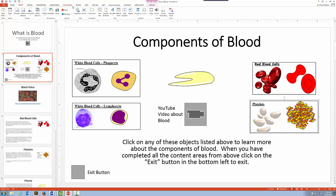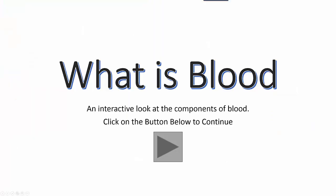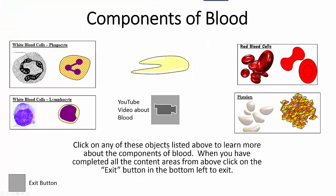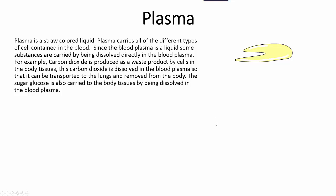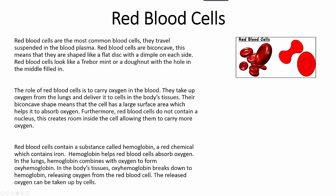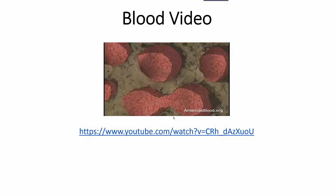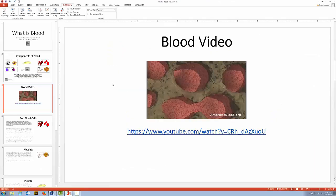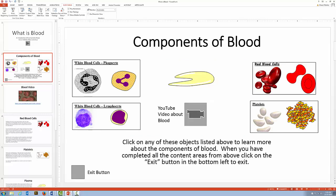Let's see what that looks like. I'll go to Slideshow > From Beginning. There's my 'What is Blood' title. If I click the Next button, it takes me to the menu with all the objects. If I click on plasma, notice it takes me to the plasma slide. But I don't have any other navigation built in — the learner could use the forward and backward arrow buttons. So I'll hit Escape and add additional navigation so learners can return back to the main menu from each subject area.